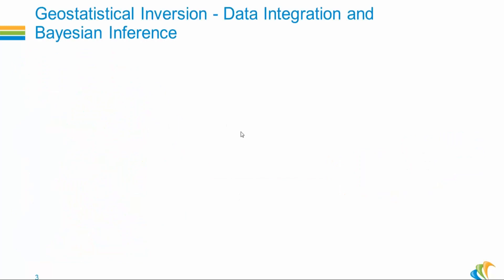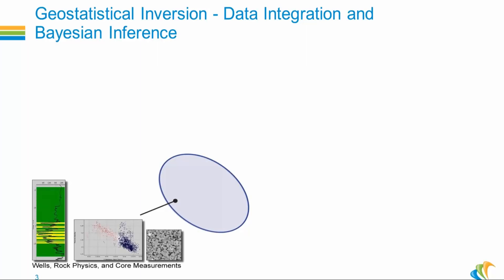Why geostatistical inversion? Because the geostatistical framework is designed to deal with uncertainty and to phrase the problem in probabilistic terms. Each source of information is modeled as a probability distribution function, each with its own uncertainty envelope. Let me illustrate this with a simple picture.